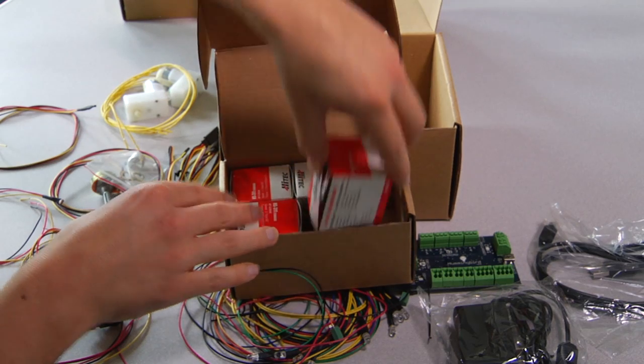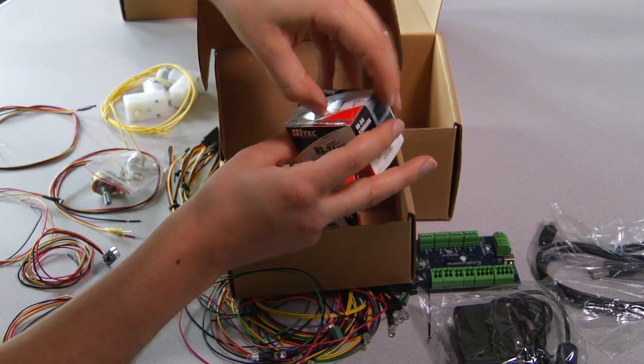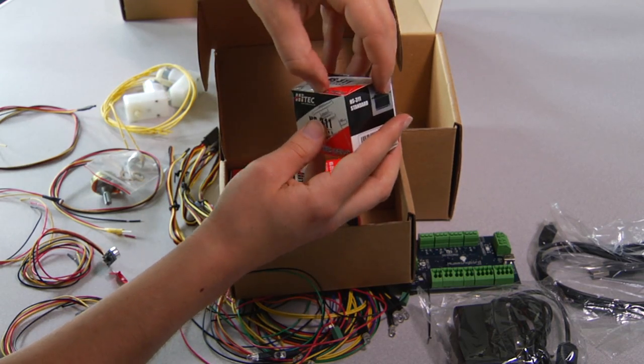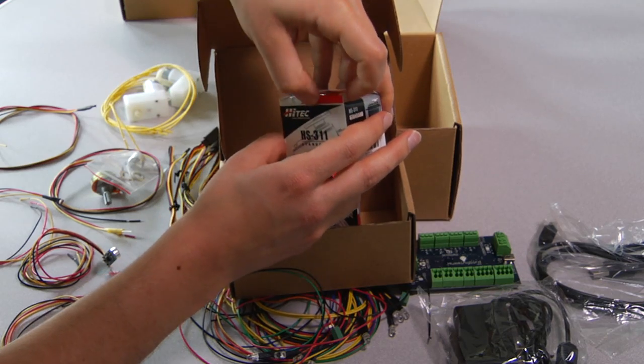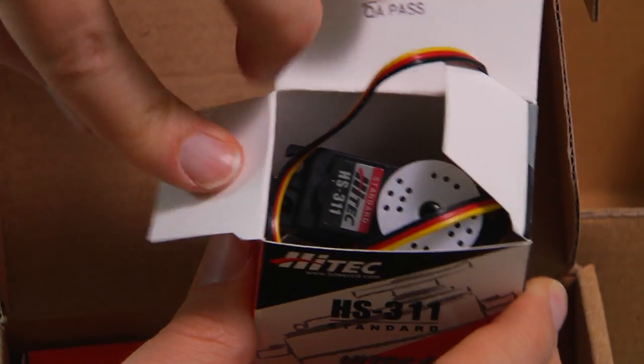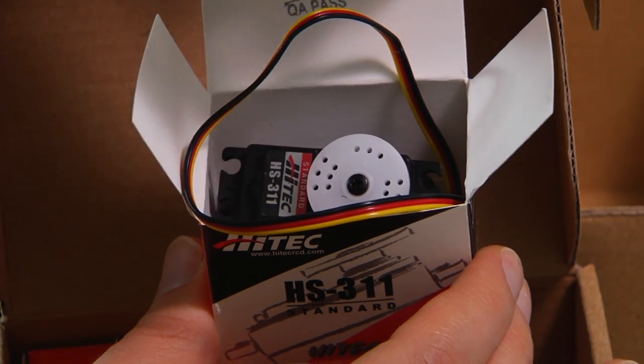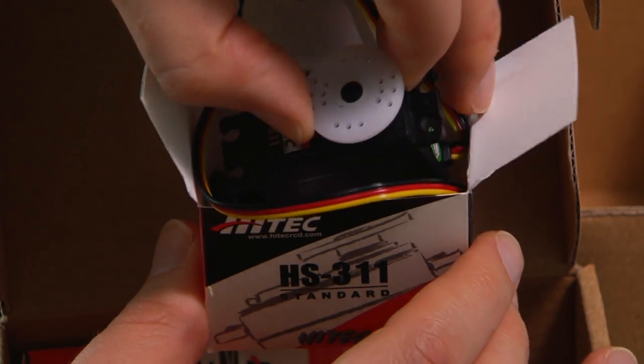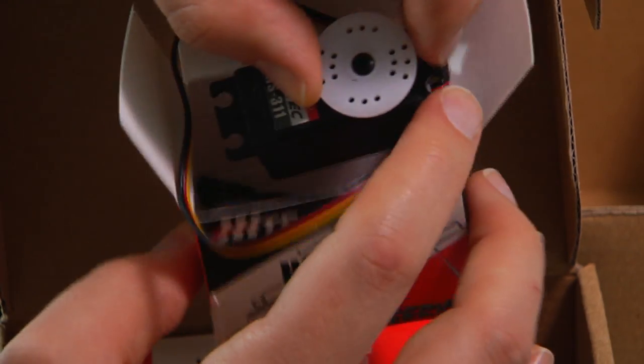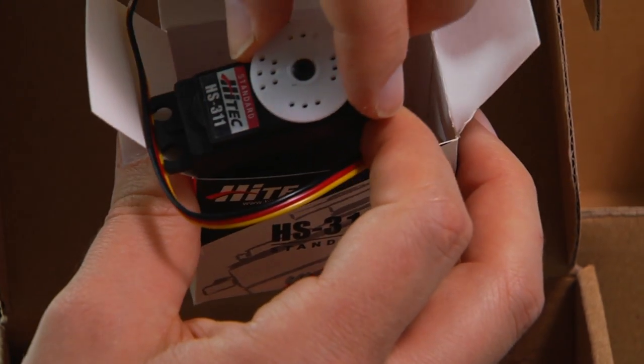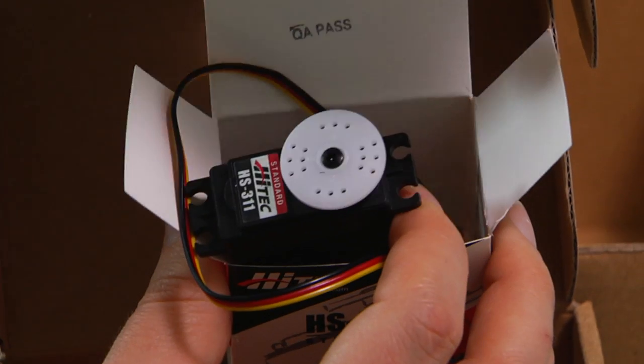And then there are also four servos. Servos are good if you need to have, for example, an arm that moves to a certain position. The servo can be told to move to any position roughly 180 degrees. The hummingbird controller in your program can tell the servo to rotate to, you know, 50 degrees or 80 degrees.